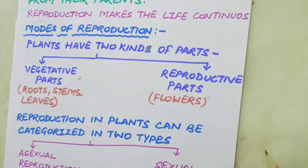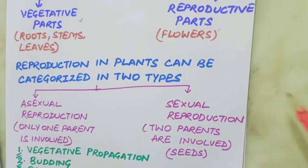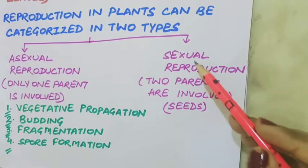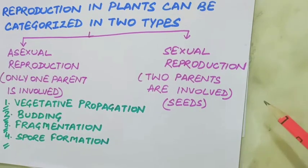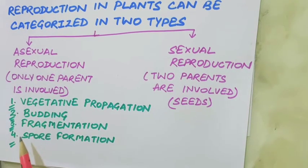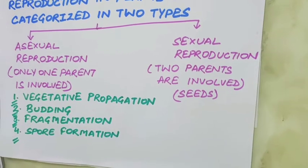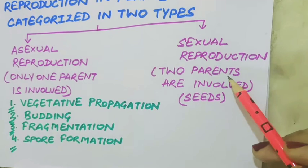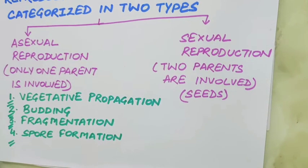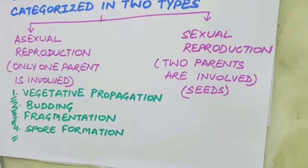Different organisms reproduce in different ways. In plants, there are two different methods of reproduction: asexual reproduction and sexual reproduction. In asexual reproduction, only one parent is involved in the production of a new individual of the same kind. In sexual reproduction, new plants are produced with the help of seeds, and two parents are involved — that is, the male and female parts of a flower.